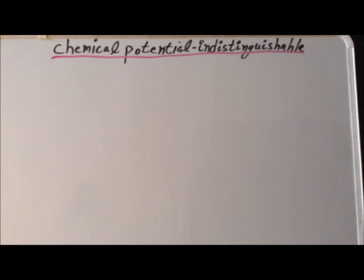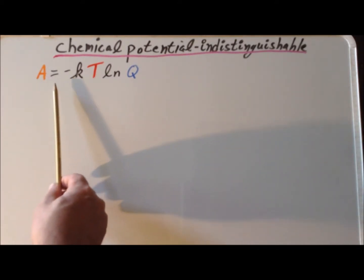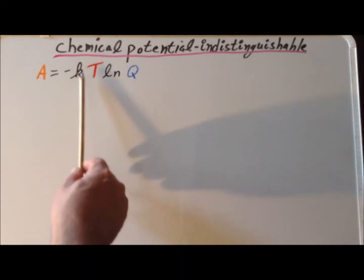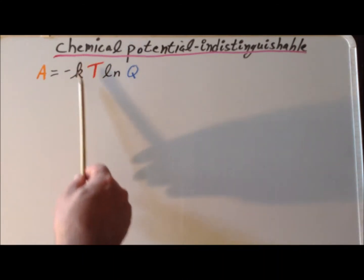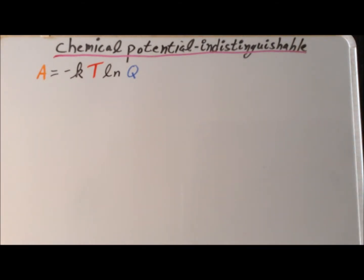Hello. In this video we are going to derive an expression for the chemical potential of a system of N indistinguishable particles. Recall that the Helmholtz energy A is equal to minus the Boltzmann constant K times the thermodynamic temperature T times the natural log of Q, where Q is our canonical ensemble partition function for the entire system.